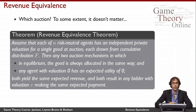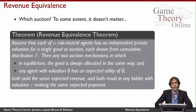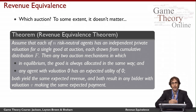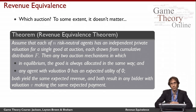Strangely enough, the revenue equivalence theorem says that, to a large extent, it actually doesn't matter which one you pick. Let's assume that we have N different risk-neutral agents, each of whom has an independent private valuation for the single good that's at auction, and each of which is drawn from a cumulative distribution F. We're going to consider two different auction mechanisms and assume two things about them: first, that in equilibrium, they allocate the good in the same way all of the time — for all of the different types that agents might have, they have the same allocations.